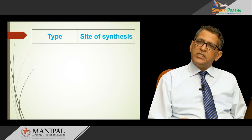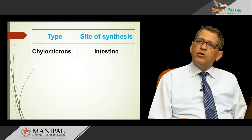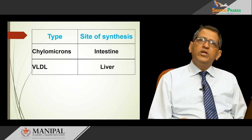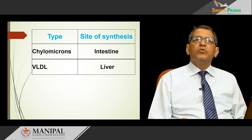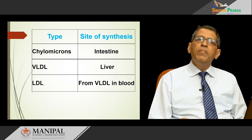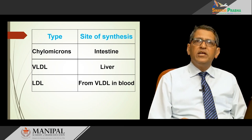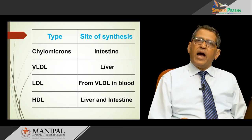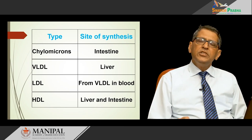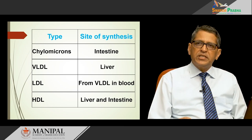Regarding site of synthesis: chylomicrons are synthesized in the intestine, VLDL is synthesized in the liver, LDL is synthesized from VLDL in the blood, and HDL is partly synthesized in the liver and partly synthesized in the intestine.